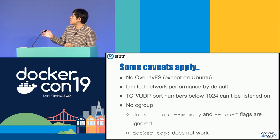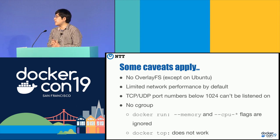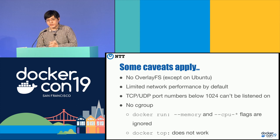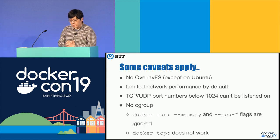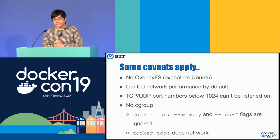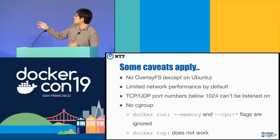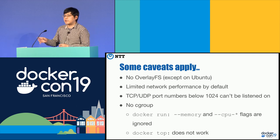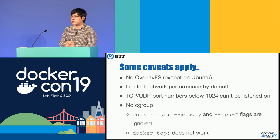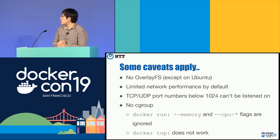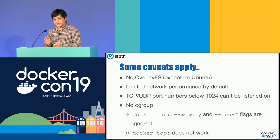For filesystem, you can use XFS instead of ext4. Network performance can be improved by installing some helper binaries. TCP port limitations can be mitigated by adding the cap_net_bind_service capability to a helper binary. Currently, we don't have support for cgroups, so docker run with --memory or --cpu flags are currently ignored. Docker top also doesn't work because it depends on cgroups. But in the near future, we can support cgroups using cgroup v2, the next generation of cgroups, which is currently being discussed in the OCI.